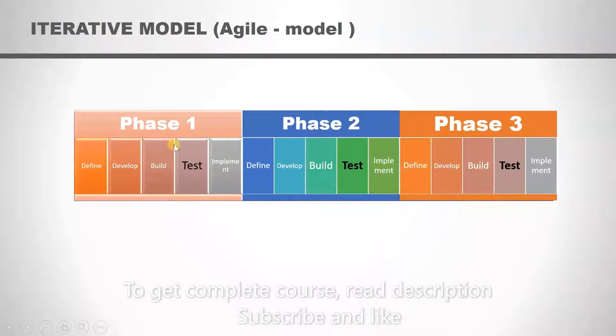Since we have to complete the project in three weeks, the time has been divided in this way. Now we have 15 requirements, so we decide to develop five requirements in phase one, five in phase two, and five in phase three. At the end of three weeks, we will have all 15 requirements.